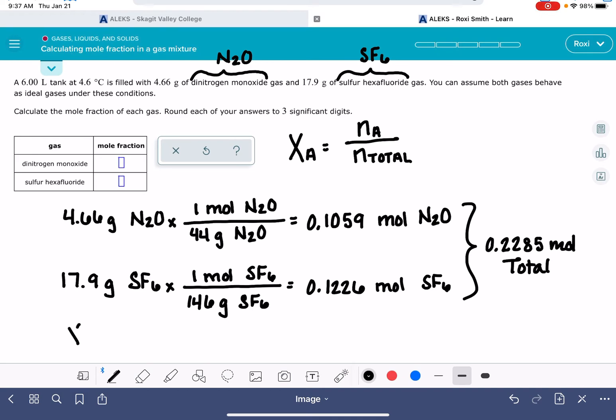For the mole fraction of N2O, we're going to take the moles of N2O, 0.1059, and divide that by the total moles, 0.2285. And that works out to be a mole fraction of 0.463.